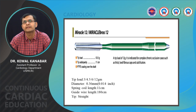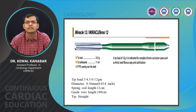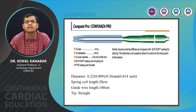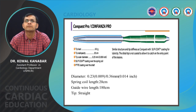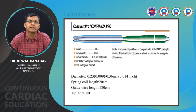The Miracle 12 wire is one of the highest tip load wires — tip load of 12 grams, indicated for very complex CTOs with very hard caps. Comes in tip loads of 3, 6, and 12 grams (Miracle 3, 6, and 12). It is a 0.014 wire, total length 180 cm, and has a long radiopaque tip of 11 centimeters. The Confianza Pro has a similar structure in tip stiffness to Conquest, with slip coat coating for lubricity. The distal tip is not coated to allow it to catch the entry point of the lesion. Radiopaque portion is 20 cm, tip load is 9 grams, length is 180 cm, straight tip.